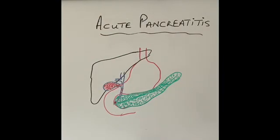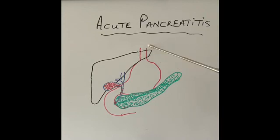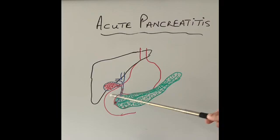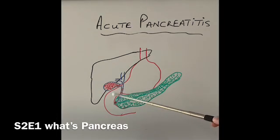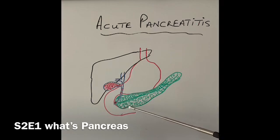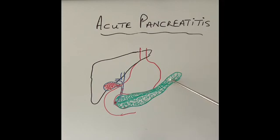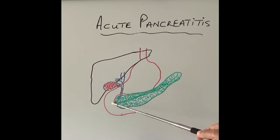Let's talk about how gallstones — the commonest cause of acute pancreatitis — cause inflammation of the pancreas gland. I've drawn a little diagram. The red pipe-like structure is the esophagus, that's our stomach, and that is the first part of the small intestine called the duodenum, which is C-shaped. The green thing here, which looks like a leaf, is the pancreas gland, and in the middle of the gland is a duct through which all the secretions from the pancreas go into the digestive system to help digest proteins, carbohydrates, and fats.